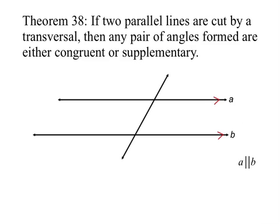That brings us to Theorem 38: if two parallel lines are cut by a transversal, then any pair of angles formed are either congruent or supplementary. We label our first angle having a measure of n degrees, and then because of vertical angles, the next labeled angle also has a measure of n degrees.